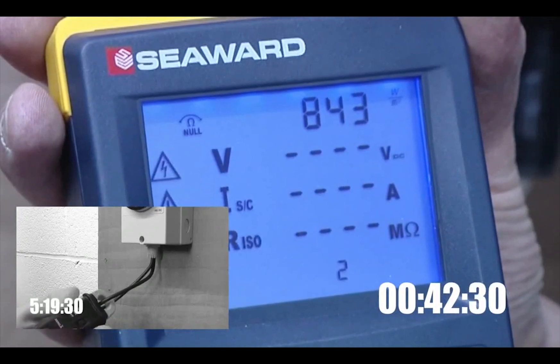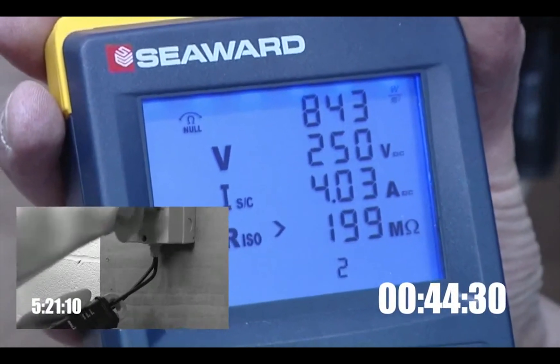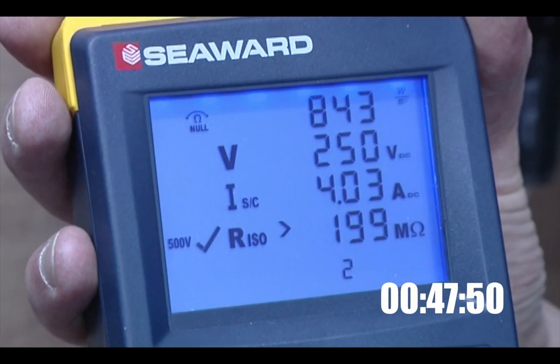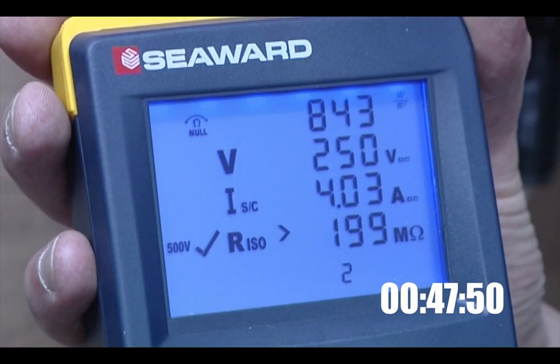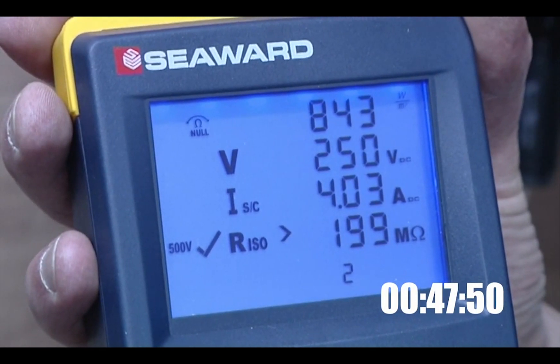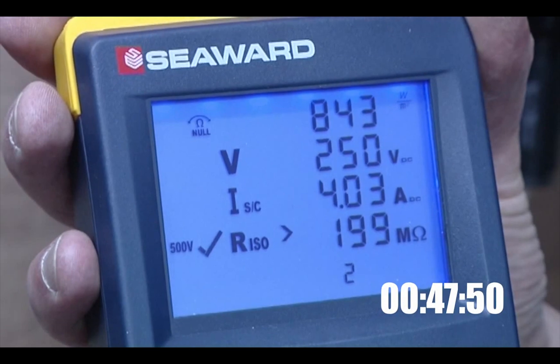With the traditional method we're using a clamp meter. With the PV150 there's the results: the open circuit voltage, the short circuit current, and the insulation resistance of the string on the screen in just over 45 seconds.